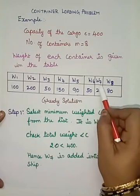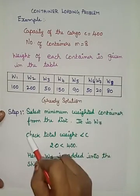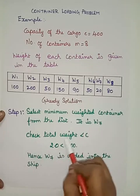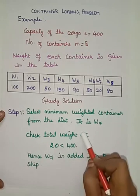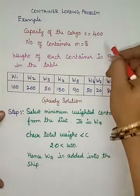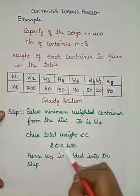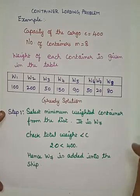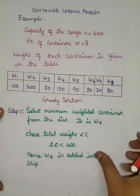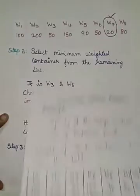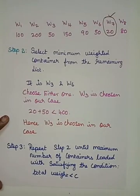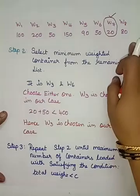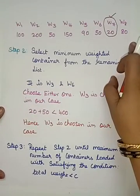Step 1: Select the minimum weighted container, which is w7 with weight 20. Check the total weight: 20 is less than C, which is 400. So w7 is added into the ship. One container is now loaded with total weight 20, which is less than 400. W7 is ruled out and the remaining seven containers are ready to load.